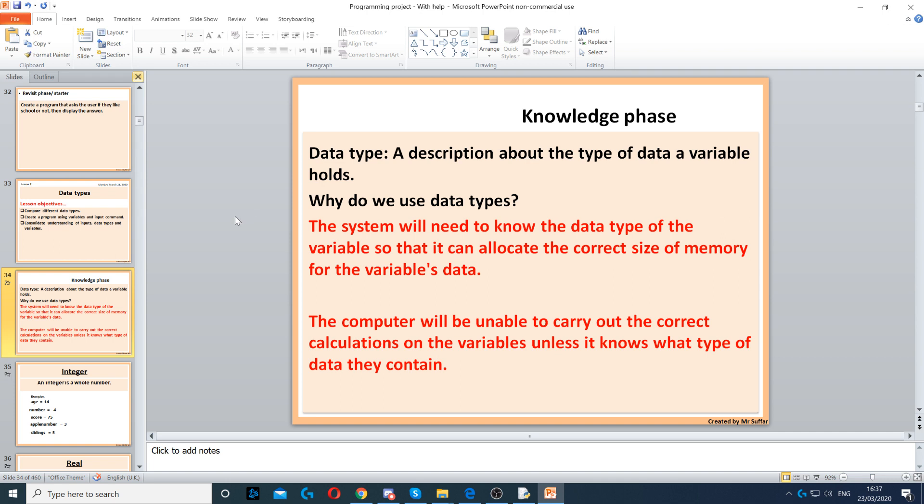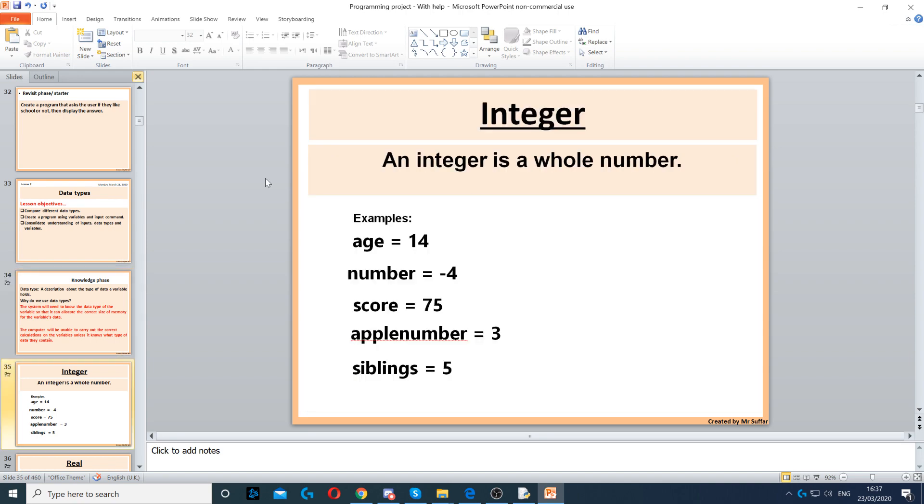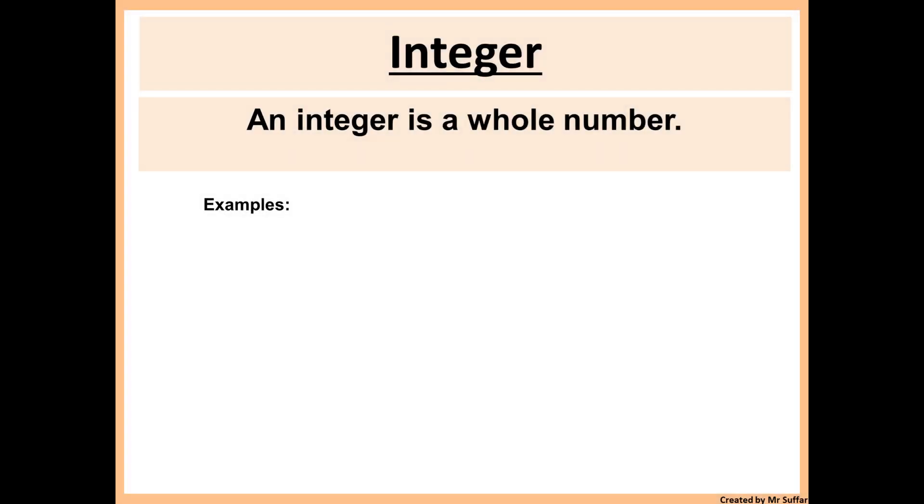So we need to ensure that we use the correct data types so that our program becomes memory efficient. So the first example is integer. Integer will hold any whole number. Any example that can only be a whole number is called an integer. For example, age - your age is a whole number. You can't say I am 14.5 years old, it has to be 14 or 15.